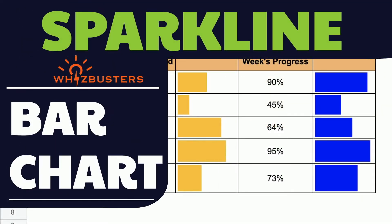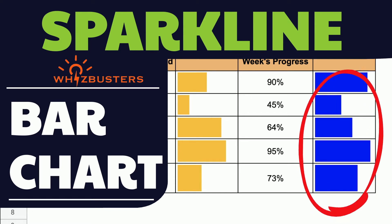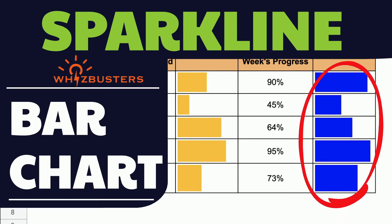Hi friends, welcome to Whistbusters. I'm Emma, and today I'm going to show you how to show trends as a bar chart in a single cell using the Sparkline function in Google Sheets.